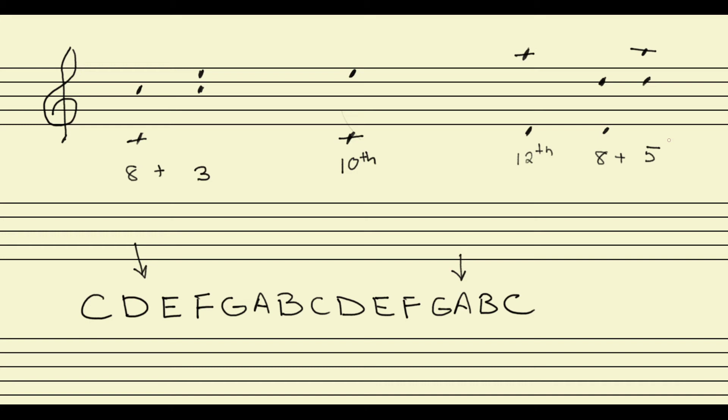Notice, by the way, this ends up with some kind of funny interval math. Because an octave plus a third, 8 plus 3, does not equal 11 as it would in the math as we think of it every day. An octave plus a third actually ends up being a tenth. 8 plus 5 does not equal 13 like we would expect it to in everyday life. 8 plus 5 actually equals a twelfth. An octave plus a fifth equals a twelfth.